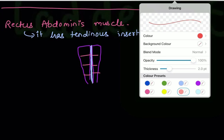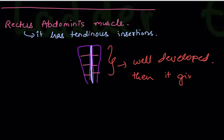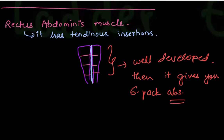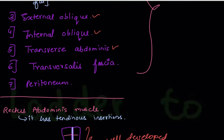If a person has well-developed rectus abdominis with its tendinous intersections, it gives you six-pack abs. So people who work out to get abs are actually working on the rectus abdominis muscle. Before looking at the picture, there are a few extra points you should know.